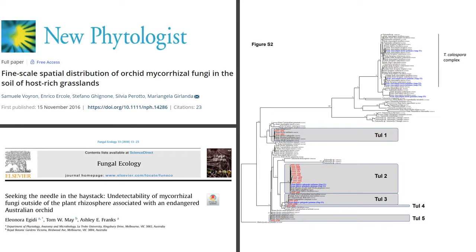These fungi cannot be found even immediately underneath the host plant. Since orchid mycorrhizal fungi are usually considered soil saprotrophs, these results opened new questions about the distribution of fungi. Where are they in the environment? Is it possible that they move around through the plant roots?